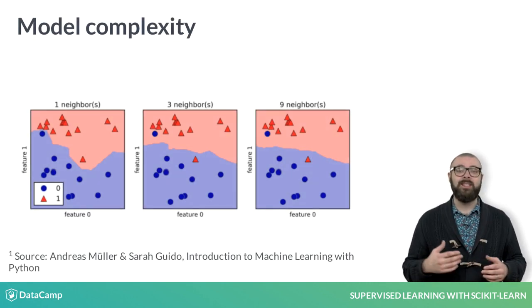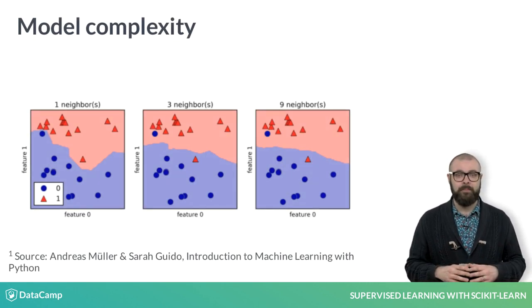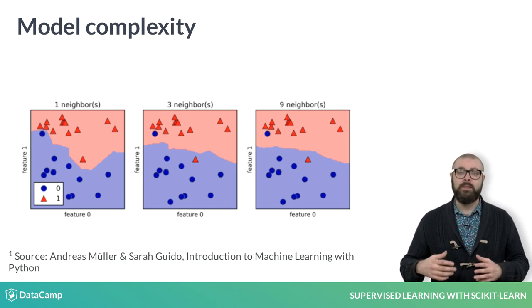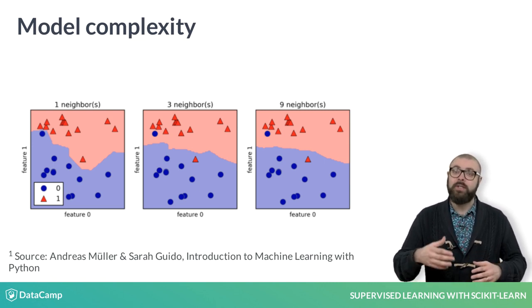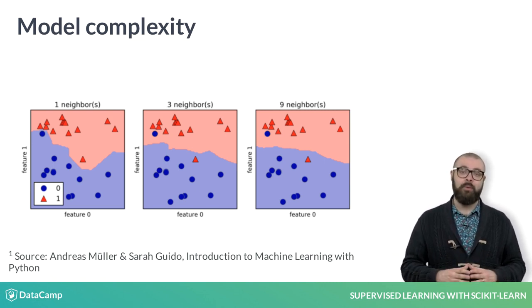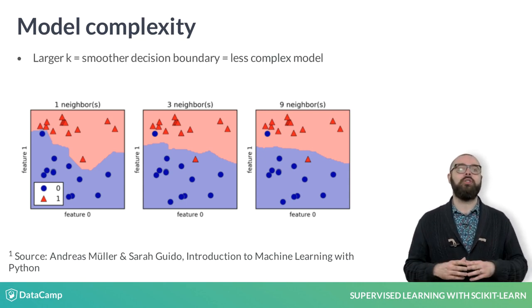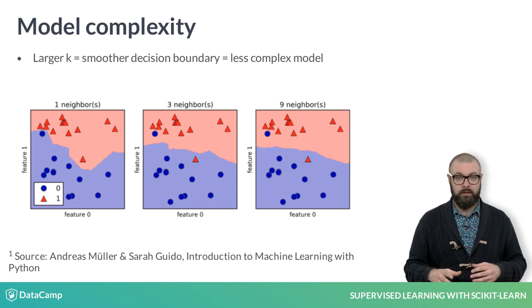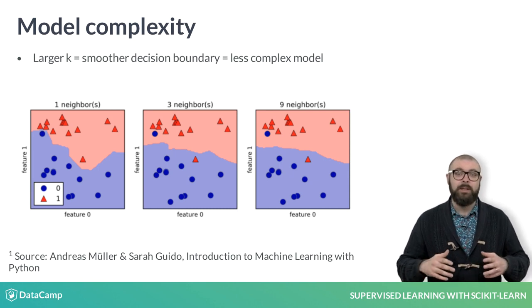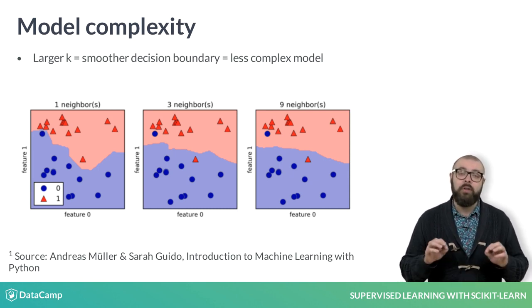Recall that we recently discussed the concept of a decision boundary. Here, we visualize a decision boundary for several increasing values of K in a KNN model. Note that as K increases, the decision boundary gets smoother and less curvy. Therefore, we consider it to be a less complex model than those with lower K.